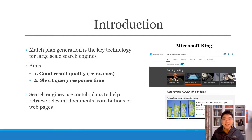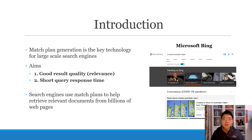Matchplan Generation is the key technology for large-scale search engines. It makes the trade-off between good result quality and short query response time. Search engines use matchplans to help retrieve relevant documents from billions of web pages within milliseconds. It is an important but difficult sequential decision-making task with few related works. Let's have a brief look at what matchplan generation is like and see why it is very important but difficult.